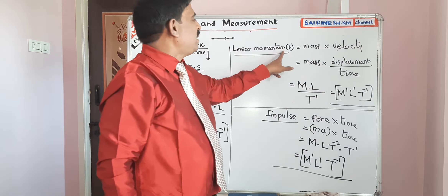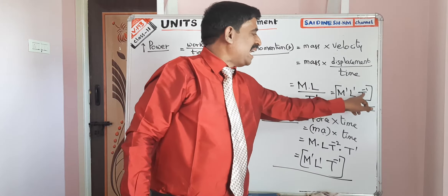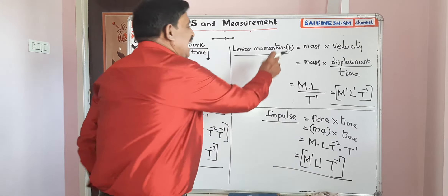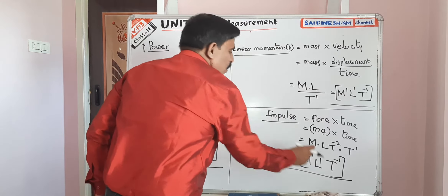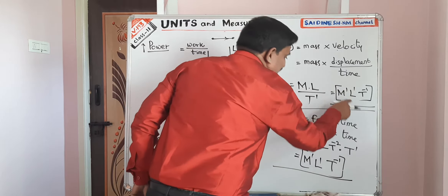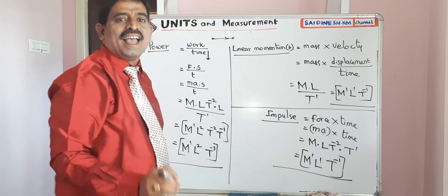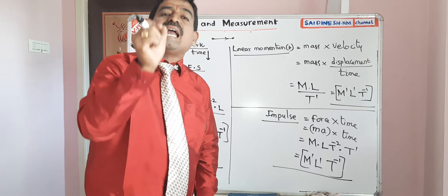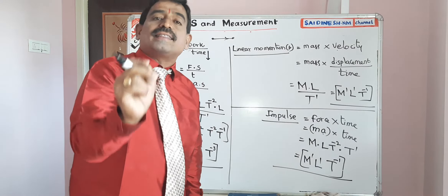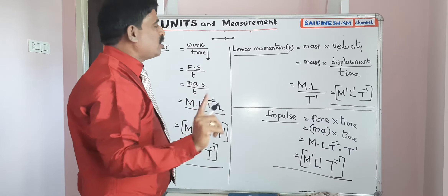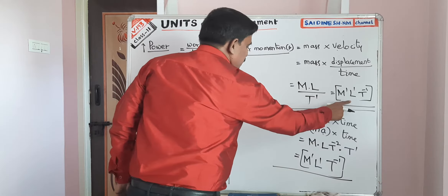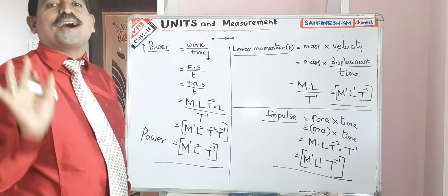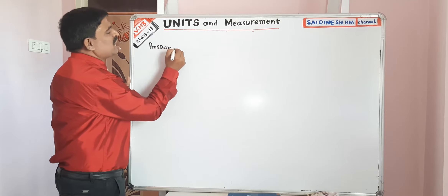Observe: momentum dimensional formula is M L T power minus 1, and impulse dimensional formula is also M L T power minus 1. Linear momentum and impulse both have the same dimensional formula. In the NEET exam, they ask: which pair of physical quantities has the same dimensional formula? The answer is linear momentum and impulse.